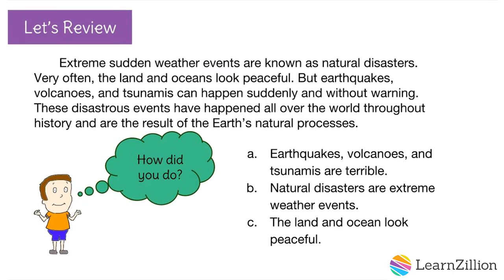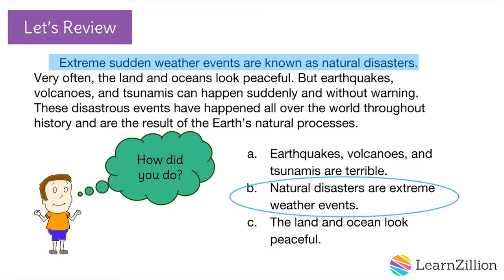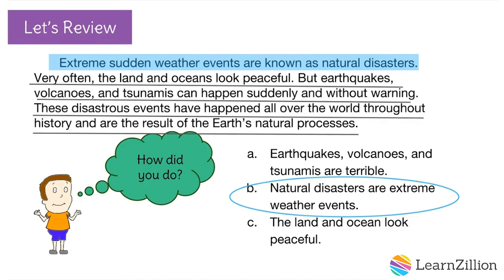How did you do? After reading this paragraph, I can see that this paragraph is about natural disasters. This first sentence is the main idea of the paragraph, so choice B would be the correct answer. Choice A is an opinion based on the information from the paragraph, so this would not be a correct choice. Choice C is a detail taken from the paragraph, so this would not be a correct choice either.